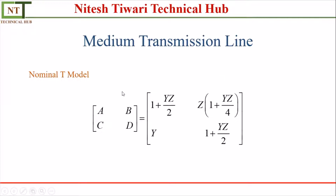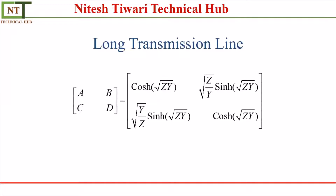For the medium transmission line, we are considering the nominal T model. If you consider the nominal pi model, the ABCD values will change. For the nominal T model, we need to compute Y and Z, and we also need to know the capacitance, since in the medium transmission line we consider capacitance, whereas in the short transmission line we neglect it. This is also the ABCD parameter of the long transmission line.